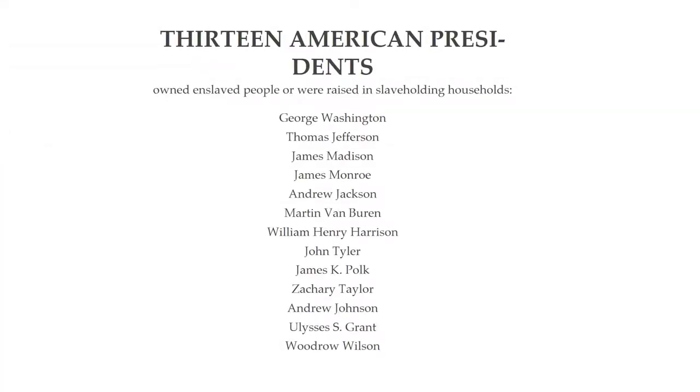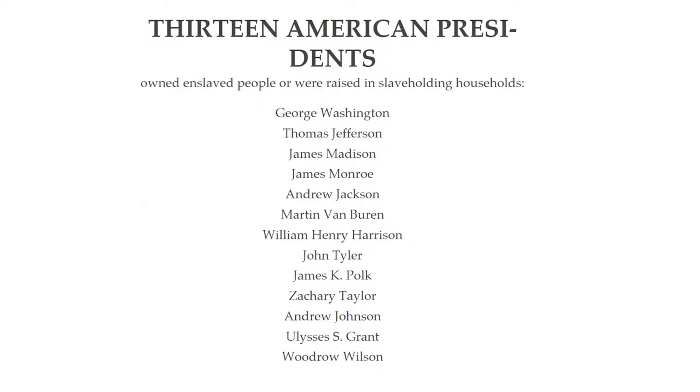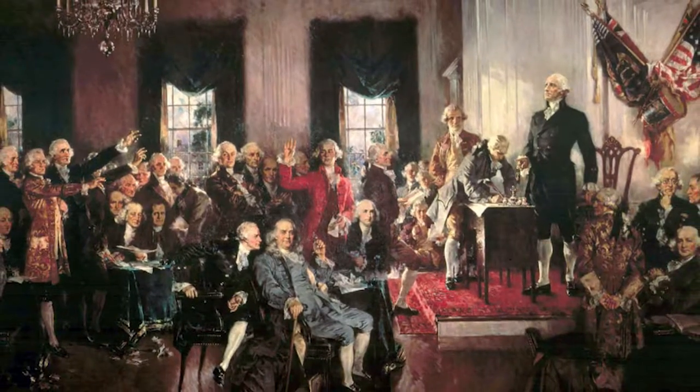Thirteen presidents total were slaveholders or grew up in a slaveholding household. Four of the first five presidents, five of the first seven — they were in office for 40 of the nearly first 50 years of the American presidency. And this is part of the story as well, that slavery was part of their political power in a sense, because if you go back to the constitutional convention and the compromises, they counted enslaved people as three-fifths of a person for determining how many seats a state had in Congress and how many electors it had.